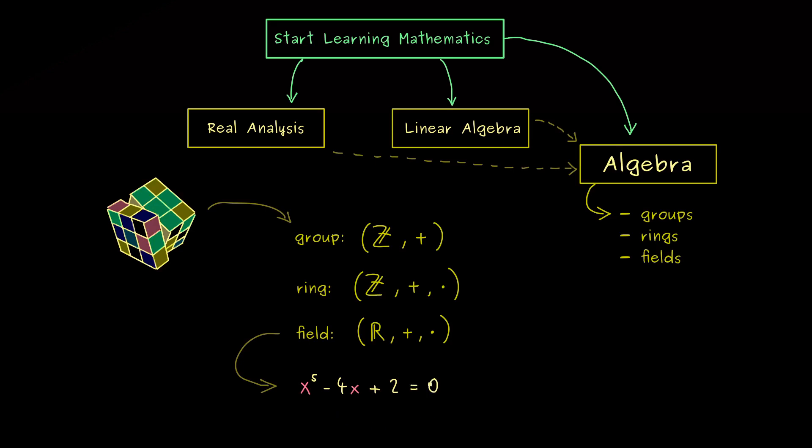And now with algebra we can show that we have at most 5 different solutions of this equation. However, our abstract algebra concepts here also show that we cannot have a general solution formula for these solutions.